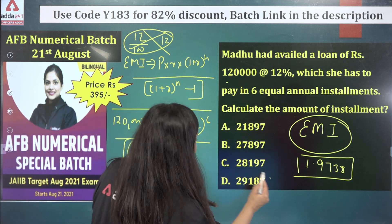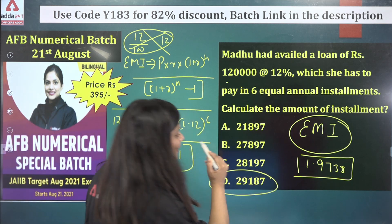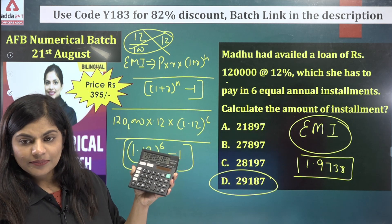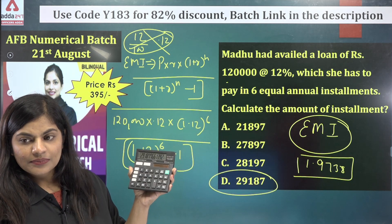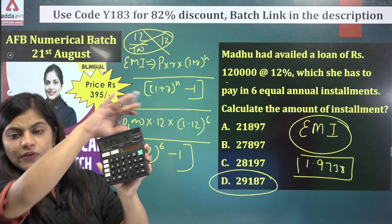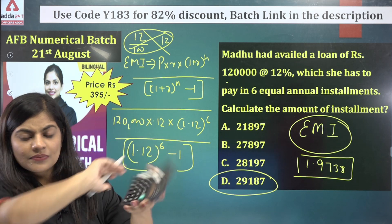Now use this value: multiply 0.12 by 1,20,000, then divide by 0.9738, and press equals. You get 29,187. That is exactly our answer — 29,187, as you can see.